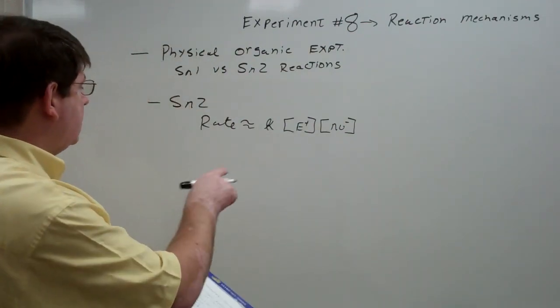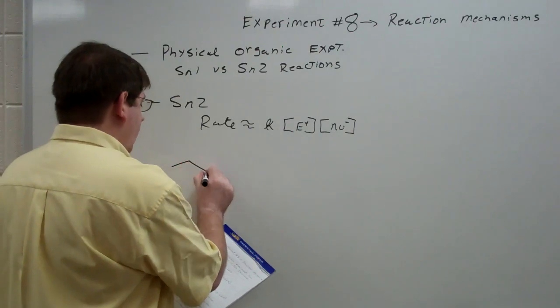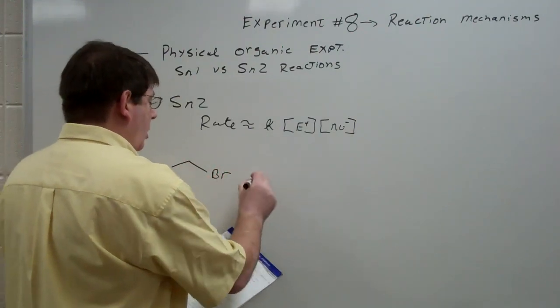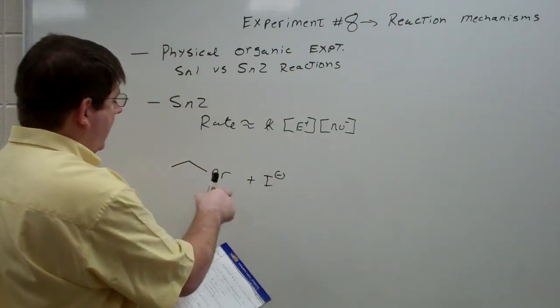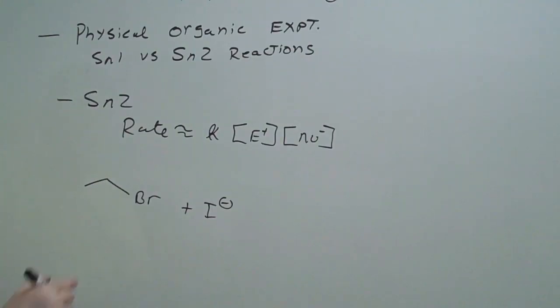So let's just look at a simple example where we have ethyl bromide, and we're going to react that with iodide as a nucleophile. So the bromide, of course, is our electrophile because the bromine is pulling electrons to itself, making this carbon partially positive. Iodide being a nucleophile because it has a negative charge.